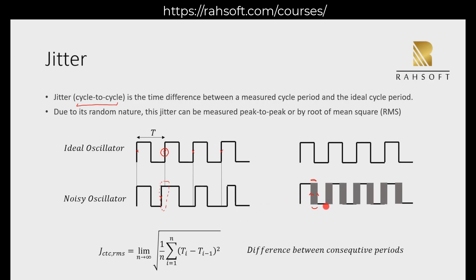It means that these edges are not fixed. And if you check the time domain — for example, if you check the eye diagram — you will see these squares. This is what you see: basically fuzzy edges.